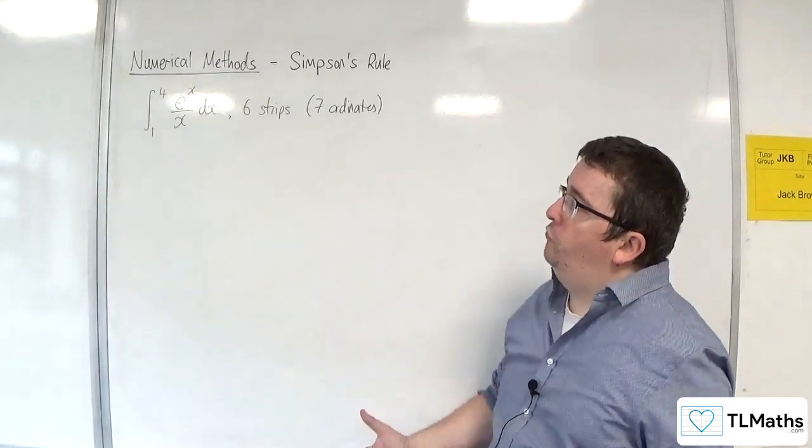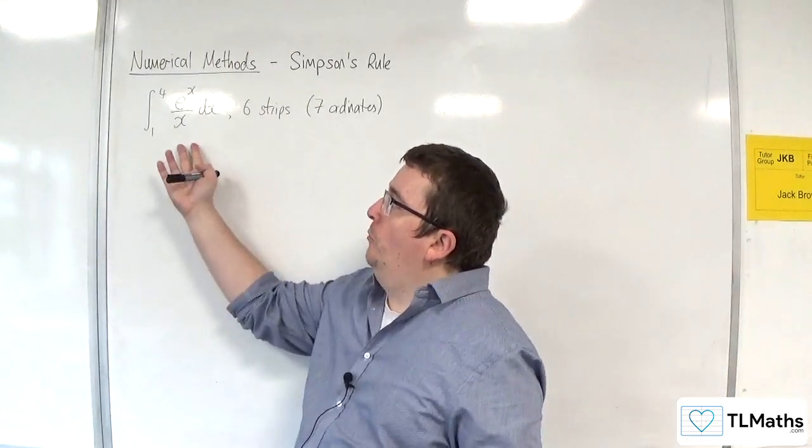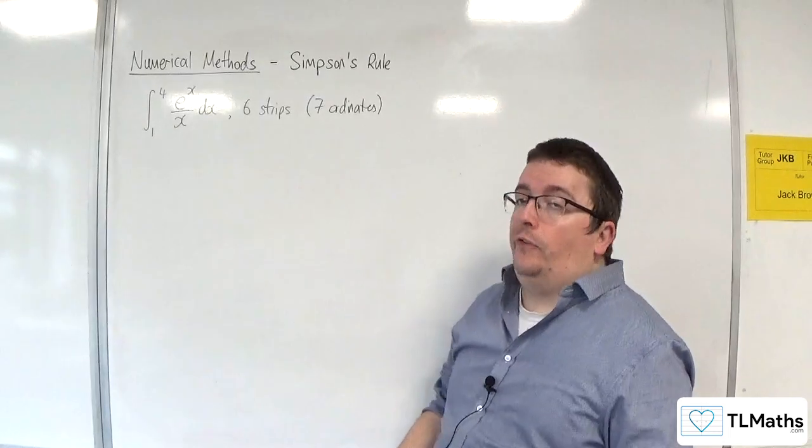In this video, we're going to use Simpson's rule to approximate the integral between 1 and 4 of e to the x over x, using 6 strips.